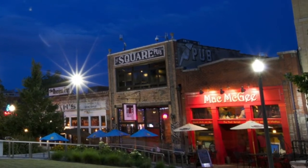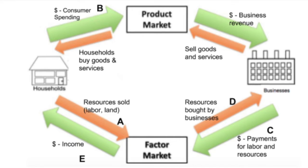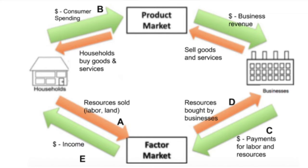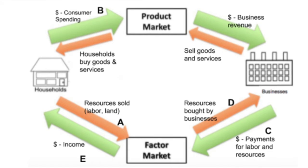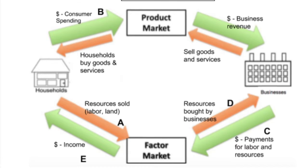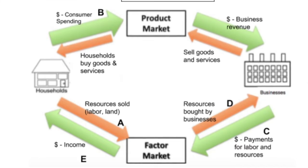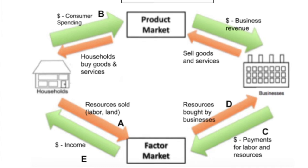Questions four, five, six, and seven deal with the flow map at the top. Four asks you about the thick arrows on the outside circle. Based on how the arrow points from households to the product market, we should know that is expenditures. And the arrow going towards households from the factor market should be income. So the outside arrows are all money, which means the inside arrows are going to be resources.